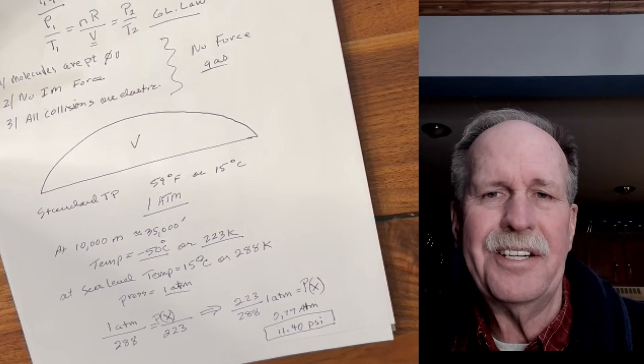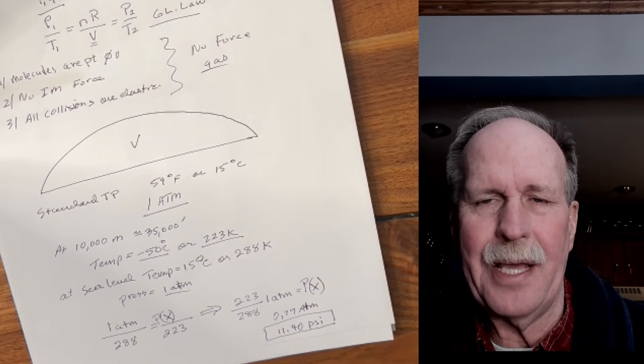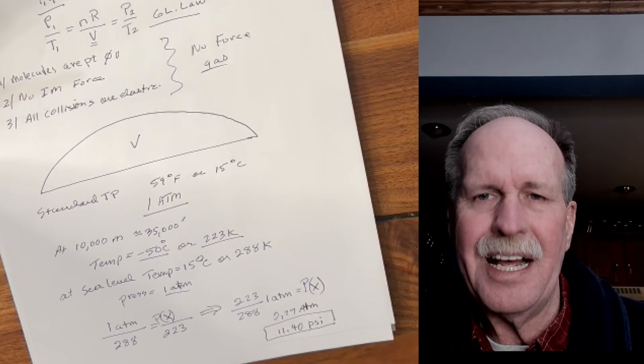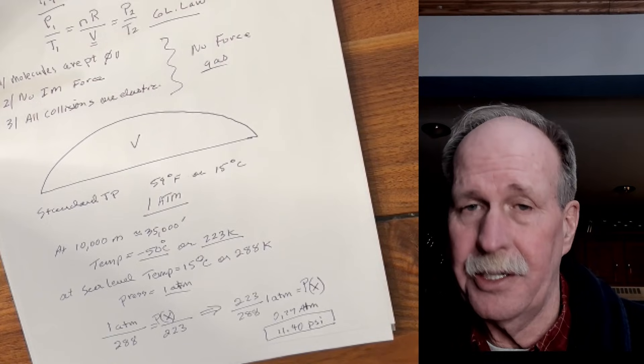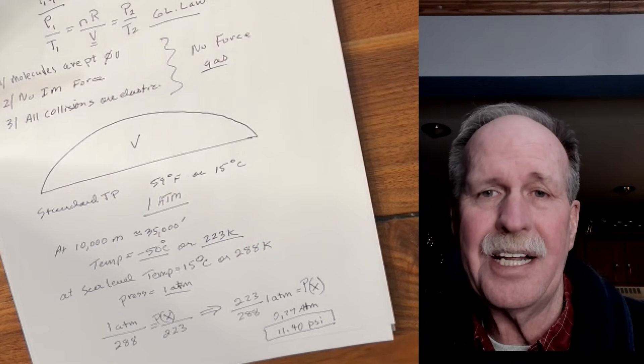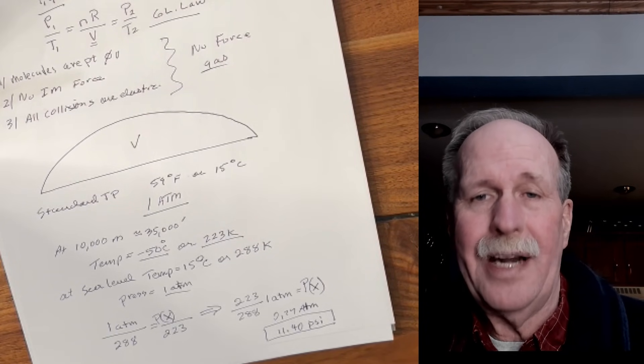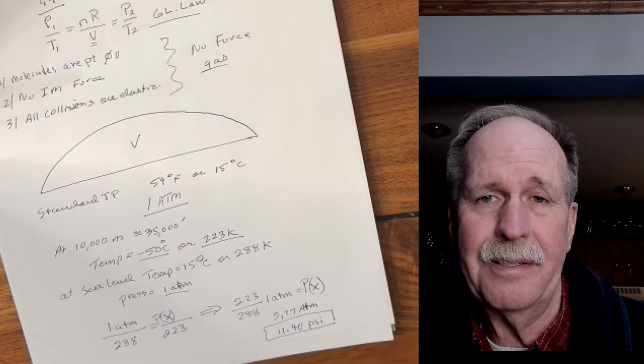That's because the atmosphere is not an ideal gas, and the temperature does not control the pressure gradient. It contributes to it, but it's not the main controller. What actually controls the pressure gradient is gravity.